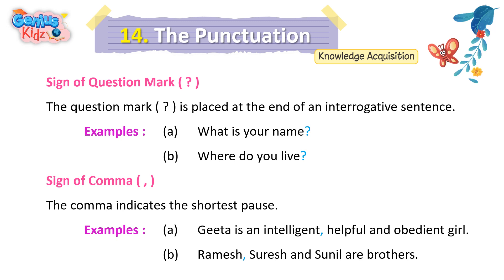Sign of Comma. The comma indicates the shortest pause. Examples: A. Geeta is an intelligent, helpful, and obedient girl. B. Ramesh, Suresh, and Sunil are brothers.